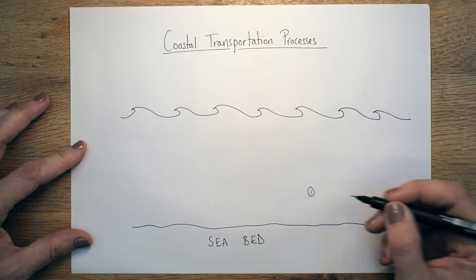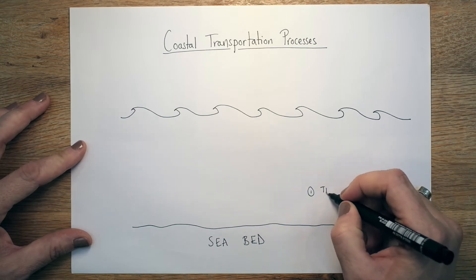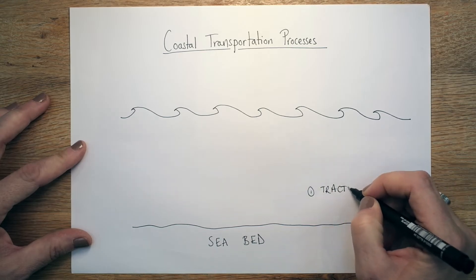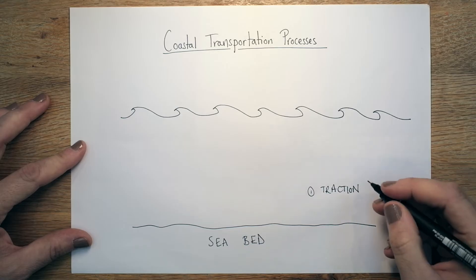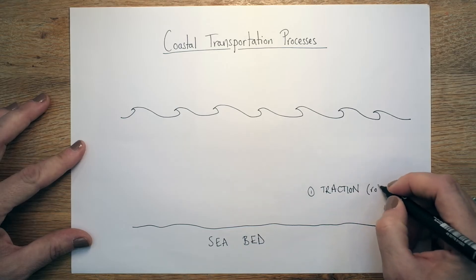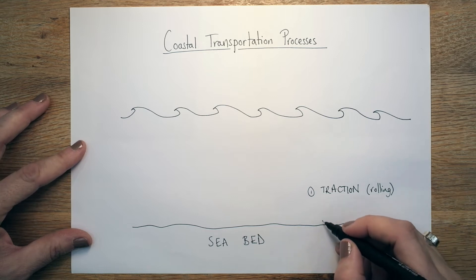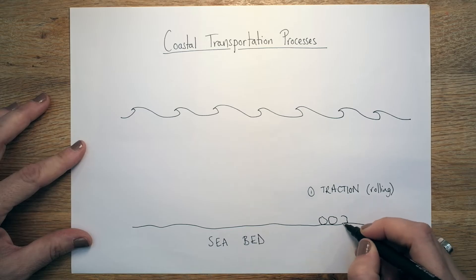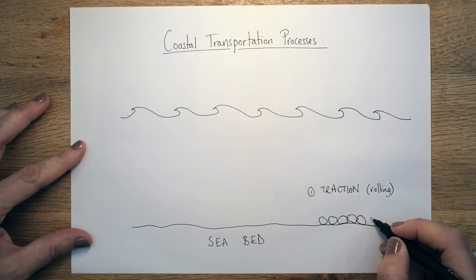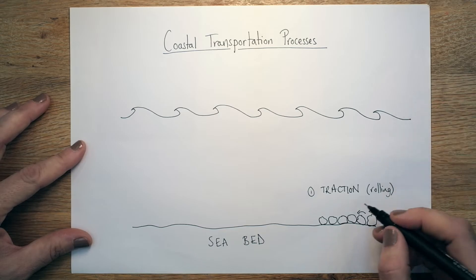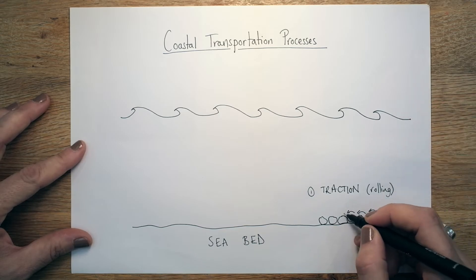So the first one, if we put a little one down here, is traction. Now traction is another word for kind of rolling, is the way I want you to remember this. The rolling of materials. So bigger pebbles, bigger stones, they might be quite angular. They don't have to be smooth, but obviously it depends on where you are in the world. They are moved by the same wave energy, but they're not lifted up because they're too heavy.